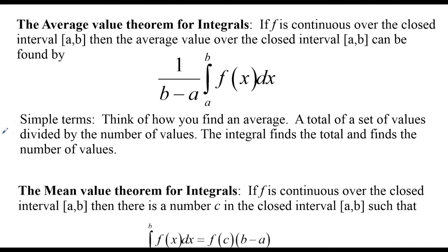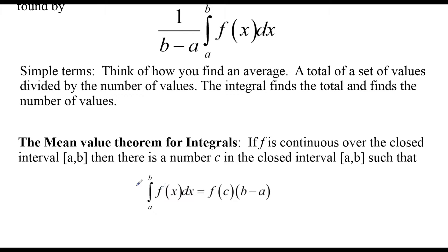The mean value theorem for integrals says that if f is continuous over a closed interval, there has to be a number c in that closed interval such that the value of the integral equals the function value times the difference (b minus a). Basically, somewhere in this interval there has to be a value c — a value for x — such that the function value equals the average value. That's going to be my first example.